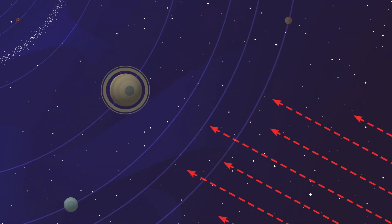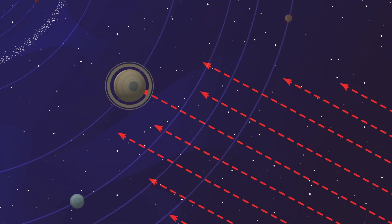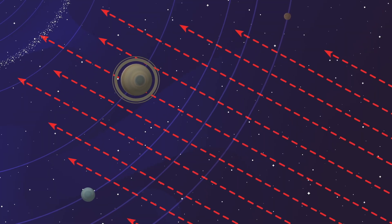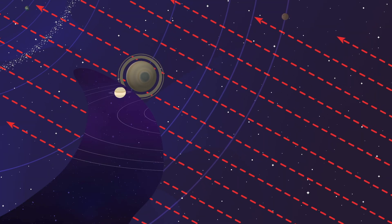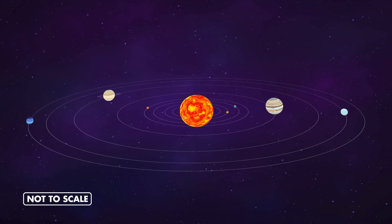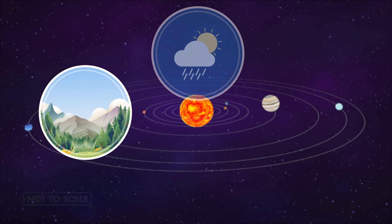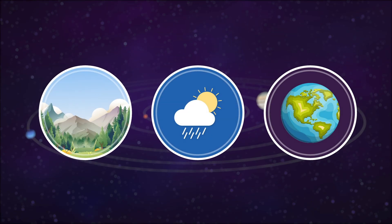Without the sun's protective influence, cosmic rays may freely enter our solar system and increase radiation levels on all planets, including Earth. Cosmic rays may also ionize planetary atmospheres, altering climates, weather patterns, and atmospheric chemistry.